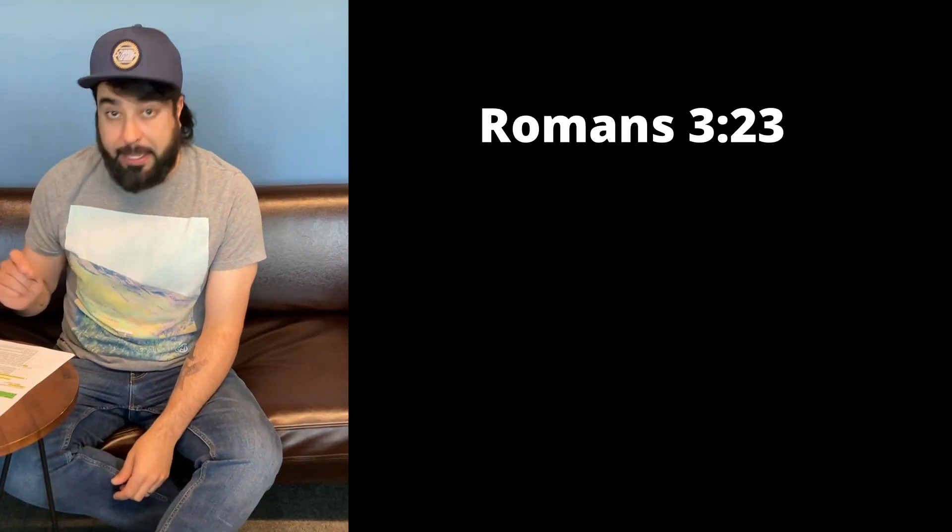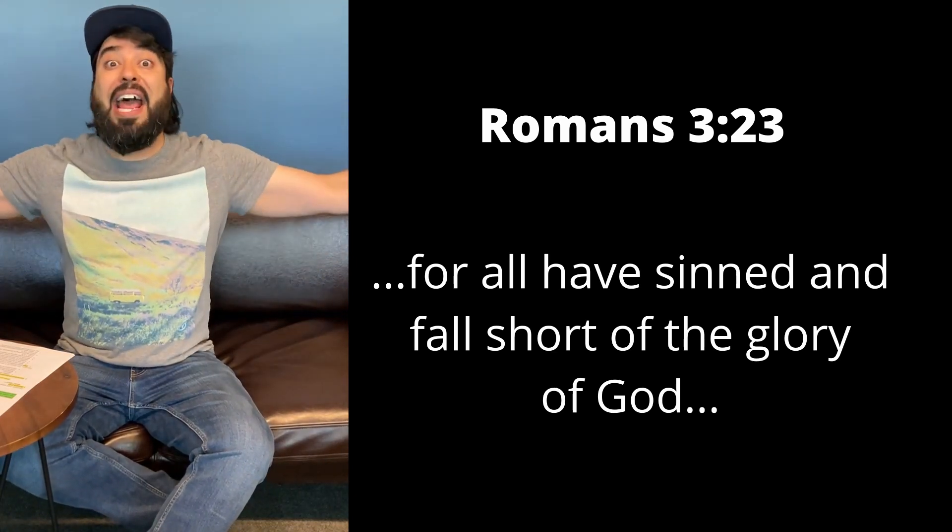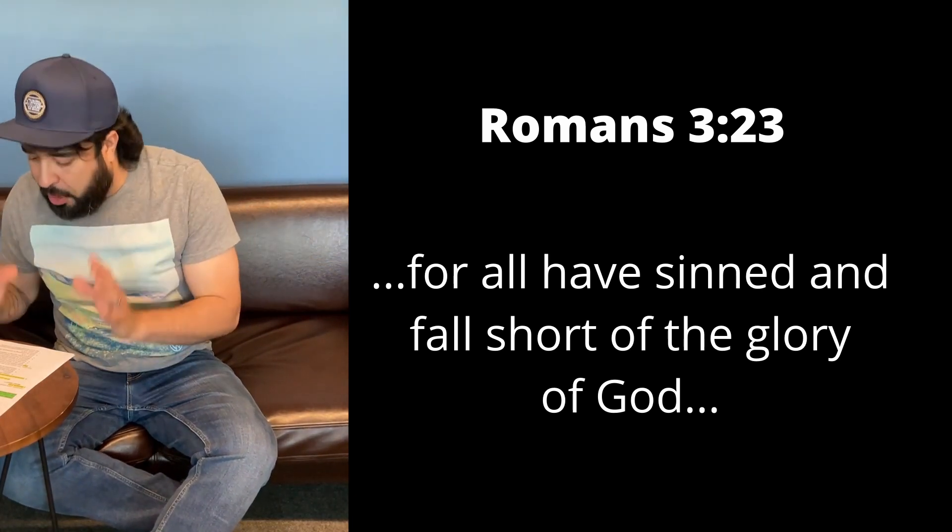So let's break down this first scripture in Romans Road — Romans 3:23: "For all have sinned and fall short of the glory of God." Going back to our structure, let me first provide some contextual understanding. This passage of scripture was written 20 to 25 years after the death and resurrection of Jesus.